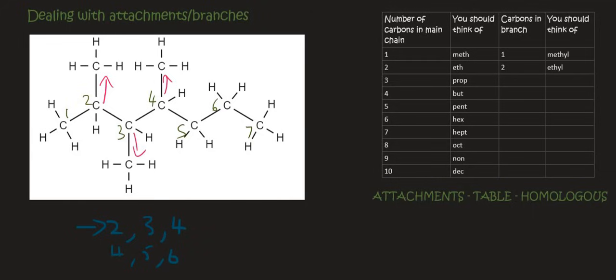We have a 7-carbon chain, so from our table that's hept-, and it's an alkane, so we end it with heptane. We've got branches on carbons 2, 3, and 4. Each of those branches has only 1 carbon, so from our branch table that's methyl. Because there are 3 of them, we say tri-. So the molecule is 2,3,4-trimethylheptane. By now you should be becoming very comfortable with the naming process for molecules that have branches. We'll keep practicing in the next couple of videos. Thanks for watching.